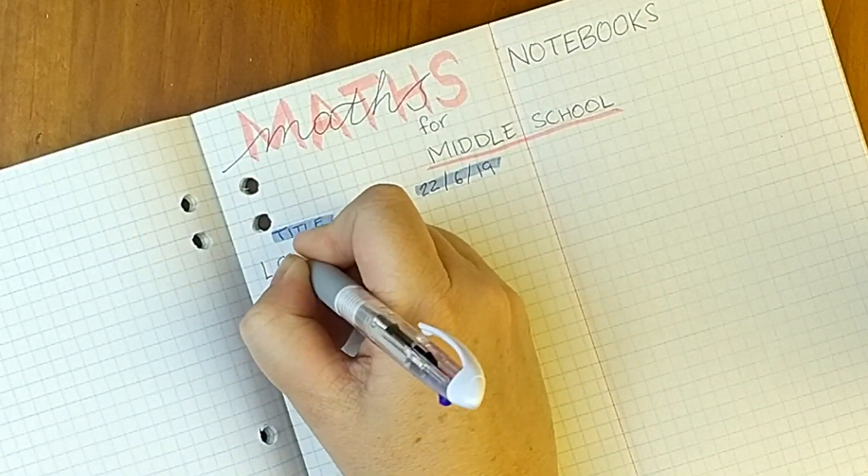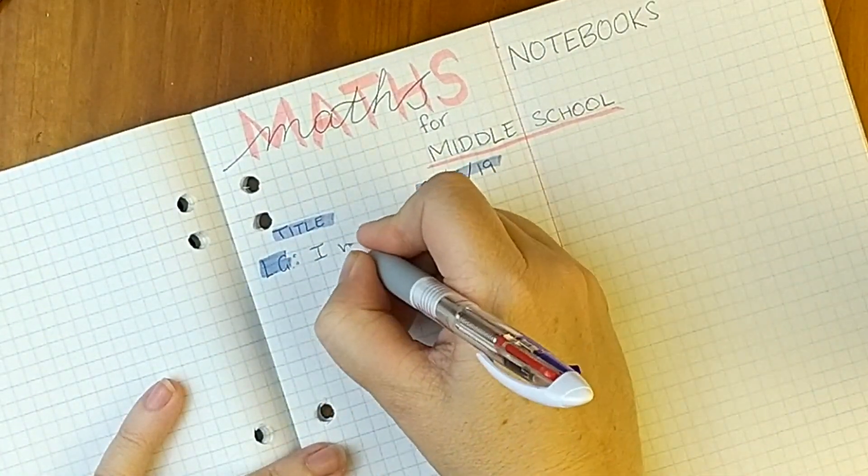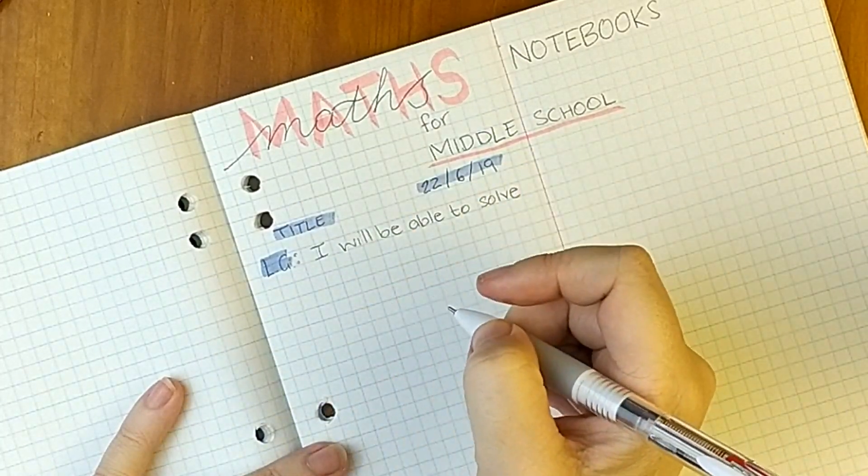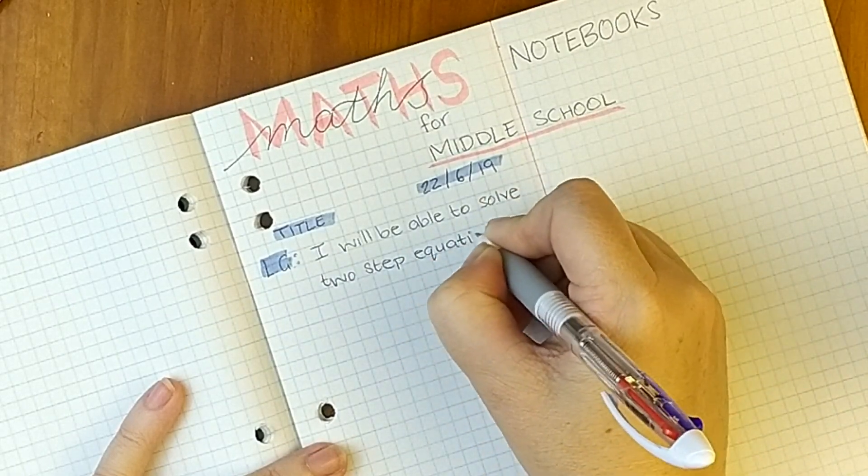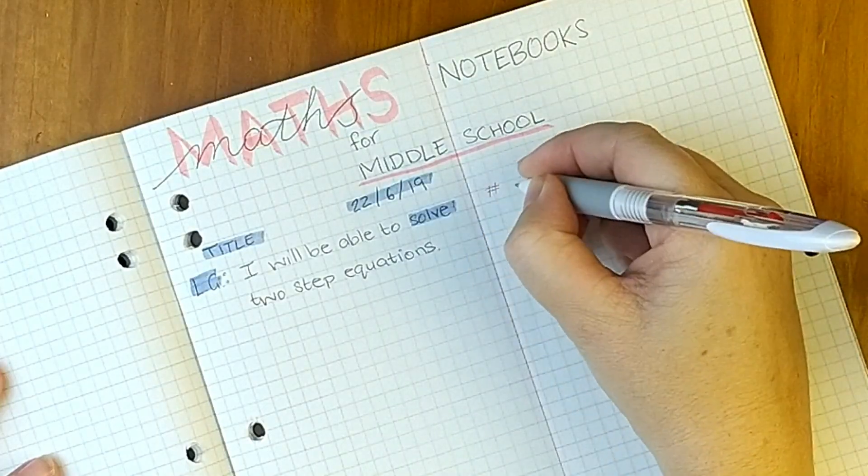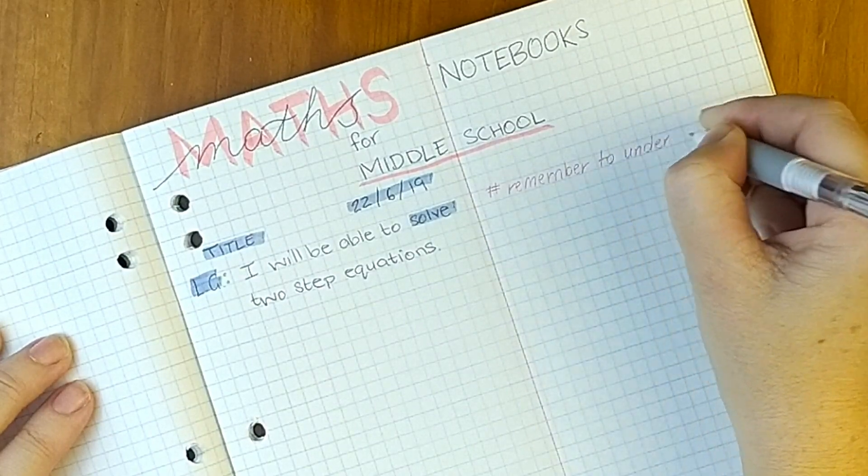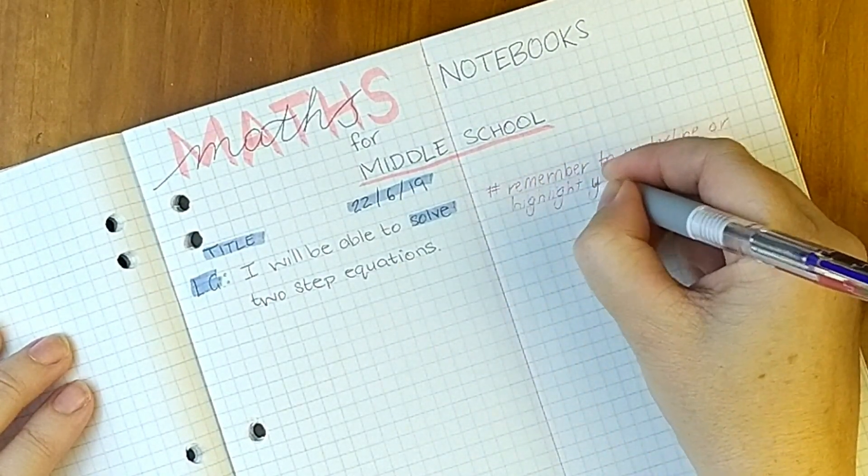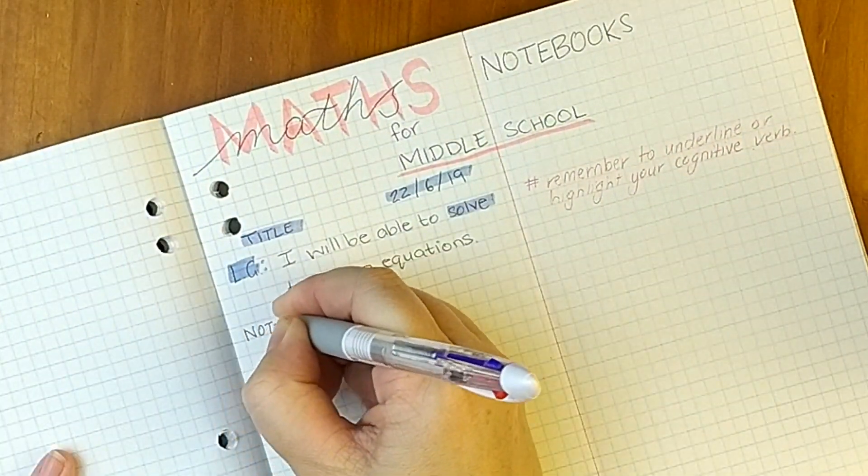The next thing is our learning goal. A learning goal is really really important when you're looking back to see exactly what it was that you were trying to achieve during that lesson. What you're also going to want to do is highlight or underline your cognitive verbs in that learning goal. Now a cognitive verb is a thinking verb, so any verb that requires you to think about how to do it.